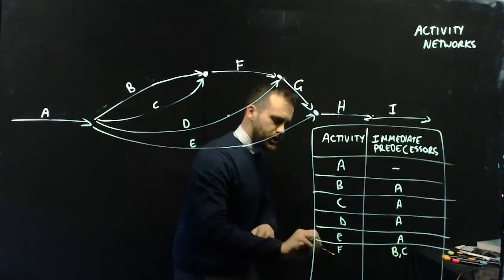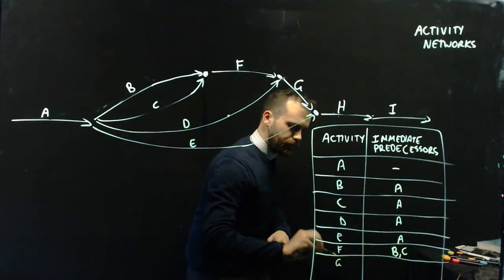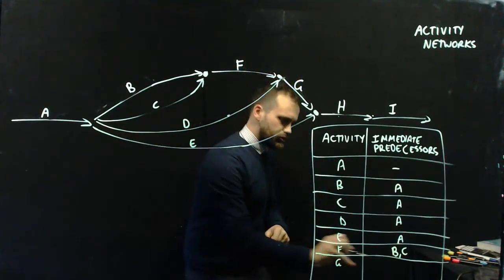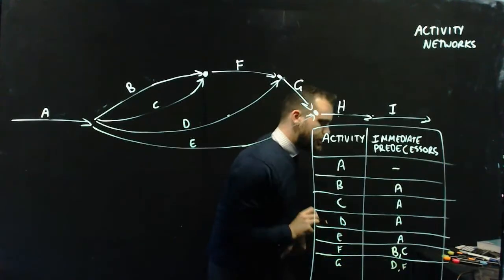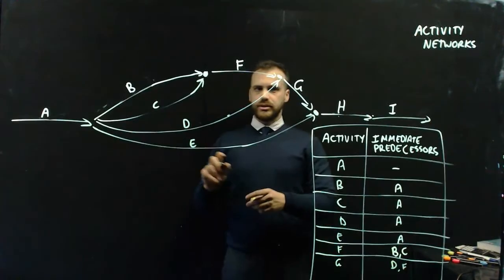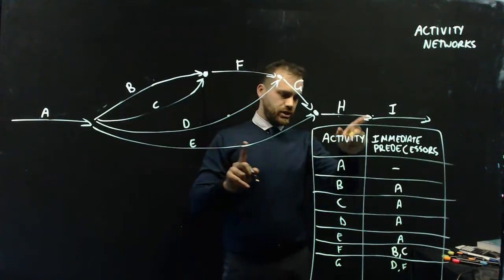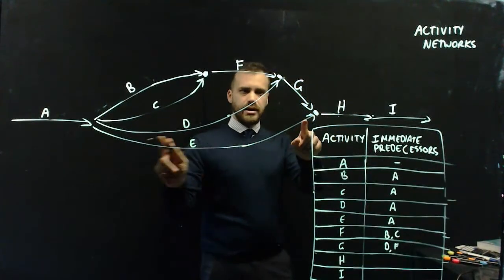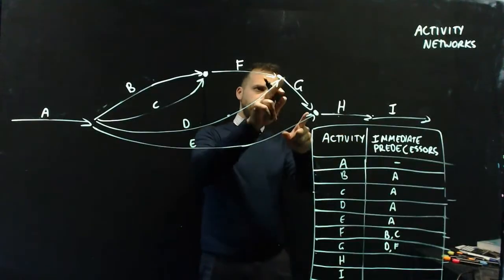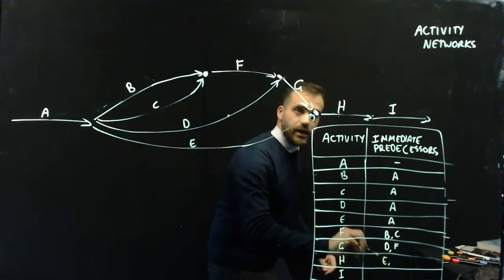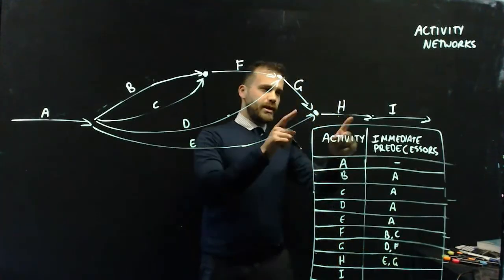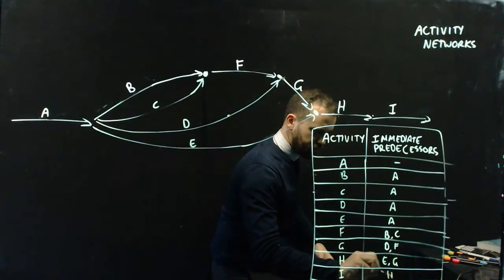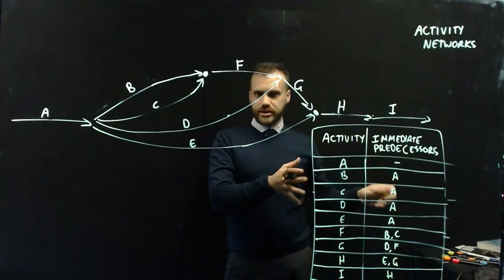What about G? G has two immediate predecessors. F has to happen and so does D. What about H? H has two immediate predecessors. We have to do E before we can do H, and we have to do G before we have to do H. And what about I? Well, the only thing we have to do before I is H. So there is our precedence table. This is our activity network, a nice way to summarize what's happening there.